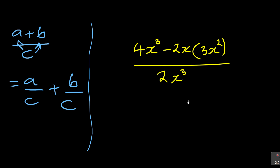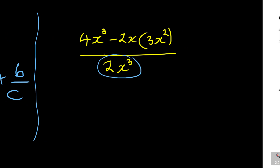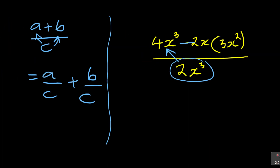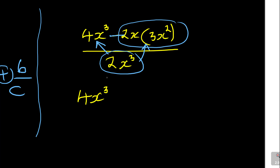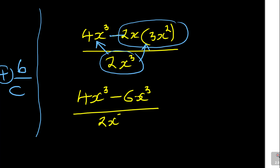This denominator affects each term on top. The minus sign means the bracket is one thing. First, open up this bracket: you'll have 4x cubed minus two times three which is minus six, then x times x squared is x to the power of three. So it's (4x cubed minus 6x cubed) over 2x cubed.